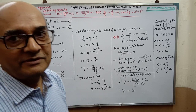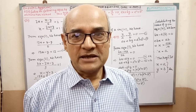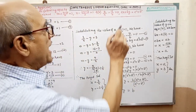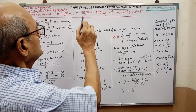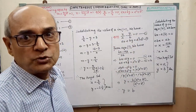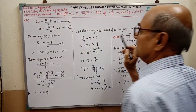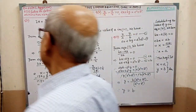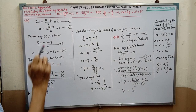Hello my dear children. Today for Class 9, simultaneous linear equations, in Part 2. In Part 1 you have seen the solving by substitution method. Today for the elimination method, there are two sums. If you follow attentively, then the method will be clear. Please see the board.